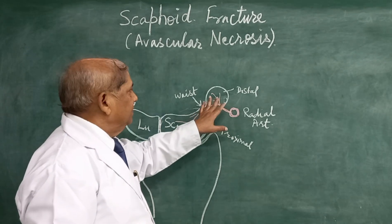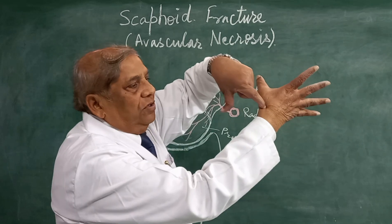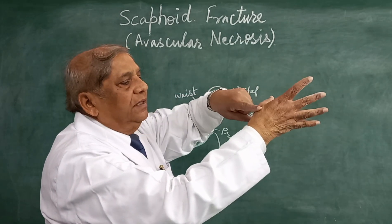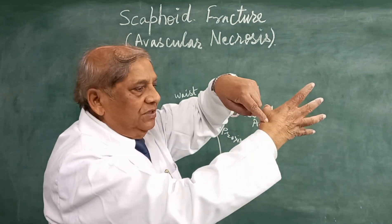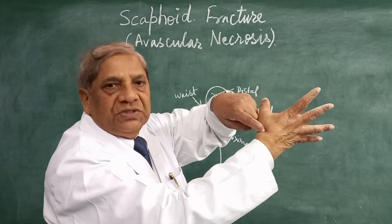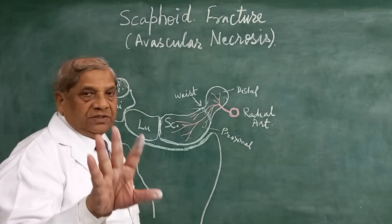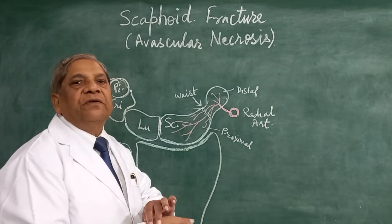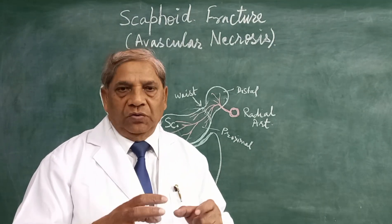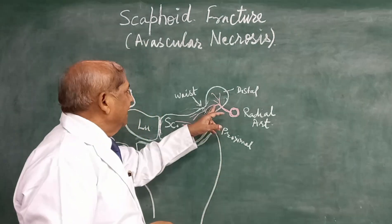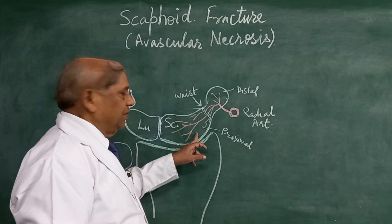This non-articular surface of the distal part is close to the anatomical snuff box. The floor of the anatomical snuff box is formed by the scaphoid bone. The radial artery lies in the scaphoid fossa — the anatomical snuff box — and while lying there, it gives many branches which penetrate into the distal part of the scaphoid bone through the non-articular surface. After entering the distal part, these arteries divide, and their branches run towards the proximal part.